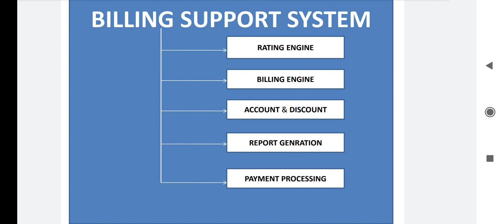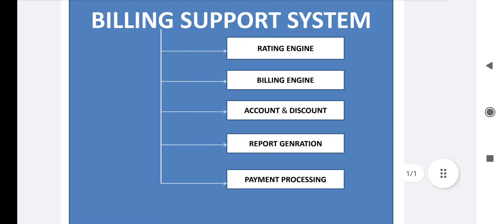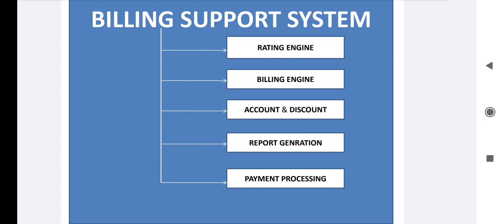The first main function of the rating engine is: it accepts all CDRs from the network element, then processes and validates each CDR to check whether it is correct or not. According to a charge sheet or tariff plan — which defines how much a local call costs per minute, what the charge is for international calls, SMS, or internet — this rating engine applies the rate. That is the main task of the rating engine.